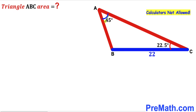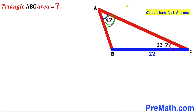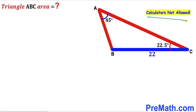Welcome to pre-math. In this video we have got triangle ABC such that side BC is 22 units, angle BAC is 45 degrees, and angle ACB is 22.5 degrees. Our task is to calculate the area of this triangle ABC and we are not supposed to be using calculators of any kind.